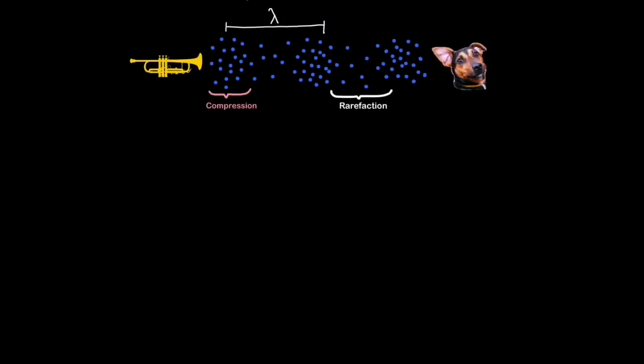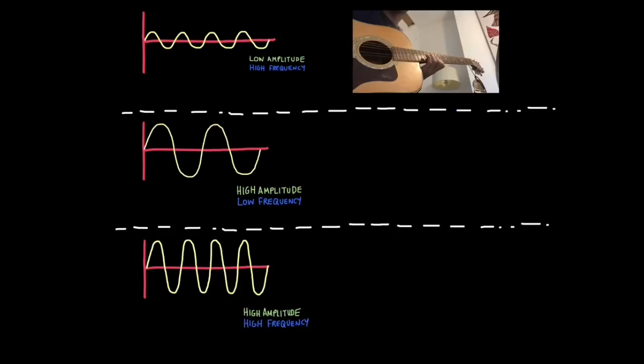So one wavelength could be the distance between one compression to the next compression, or from one rarefaction to the next rarefaction. Just be aware of that. Let's give waves a bit of a real-world context. Here, I'm going to show you a piece of music being played, and we're going to relate it to different ways we can express waves on a graph.